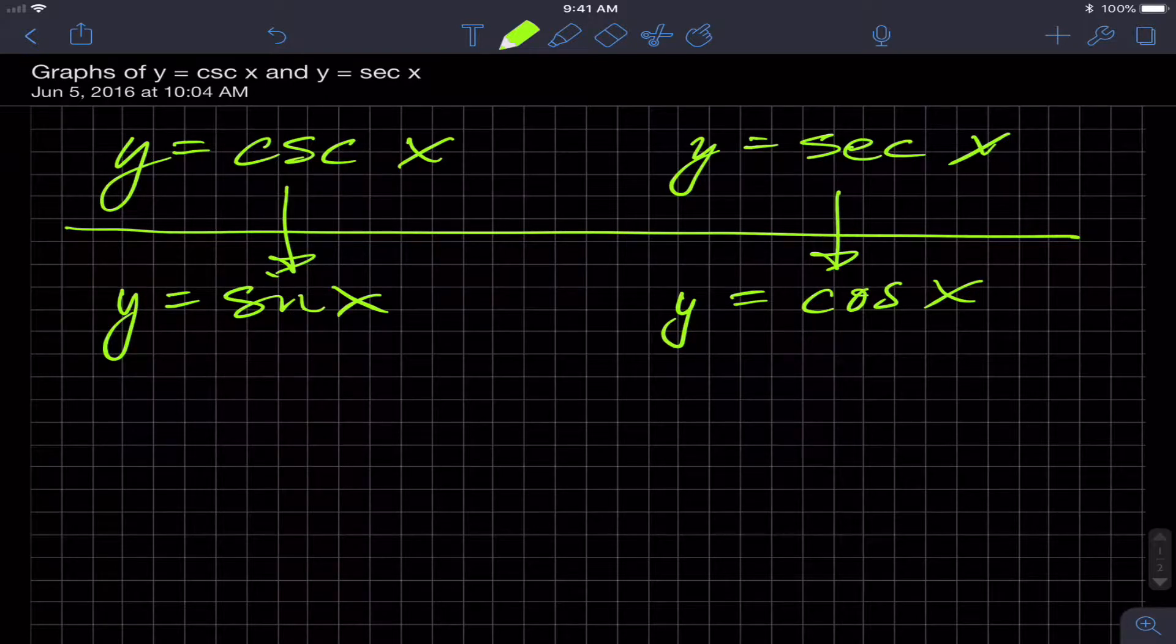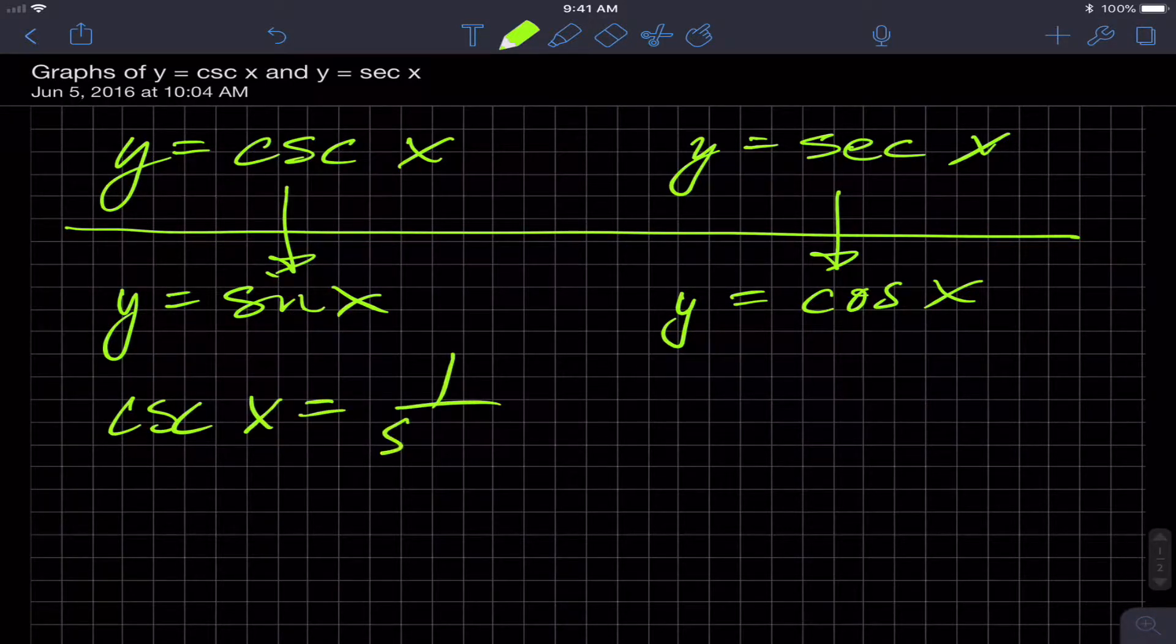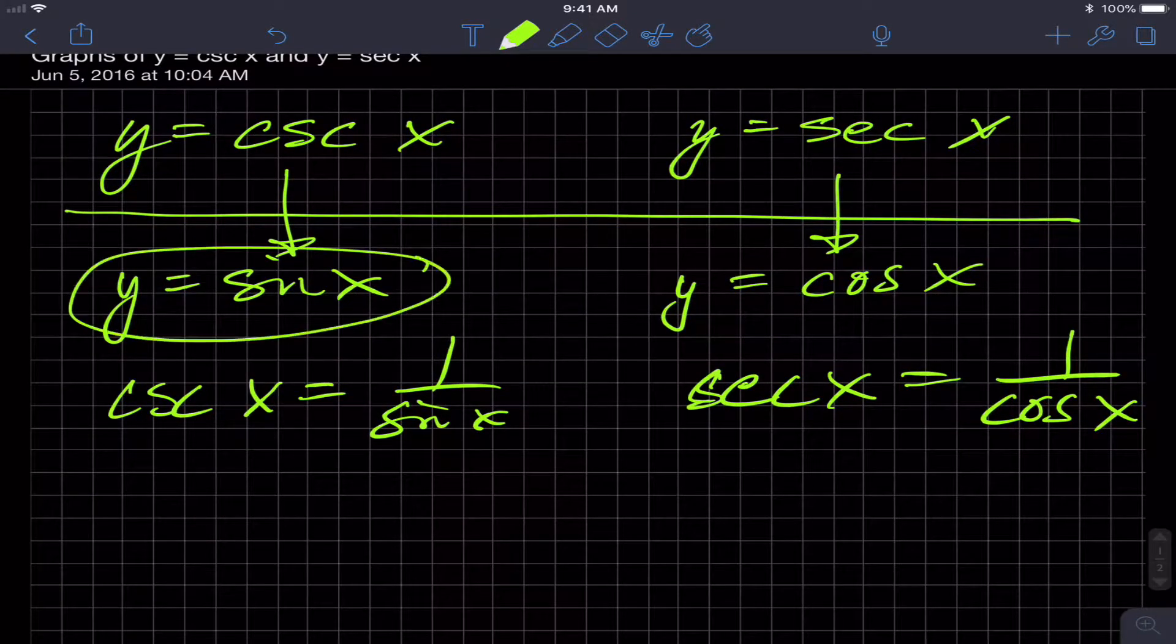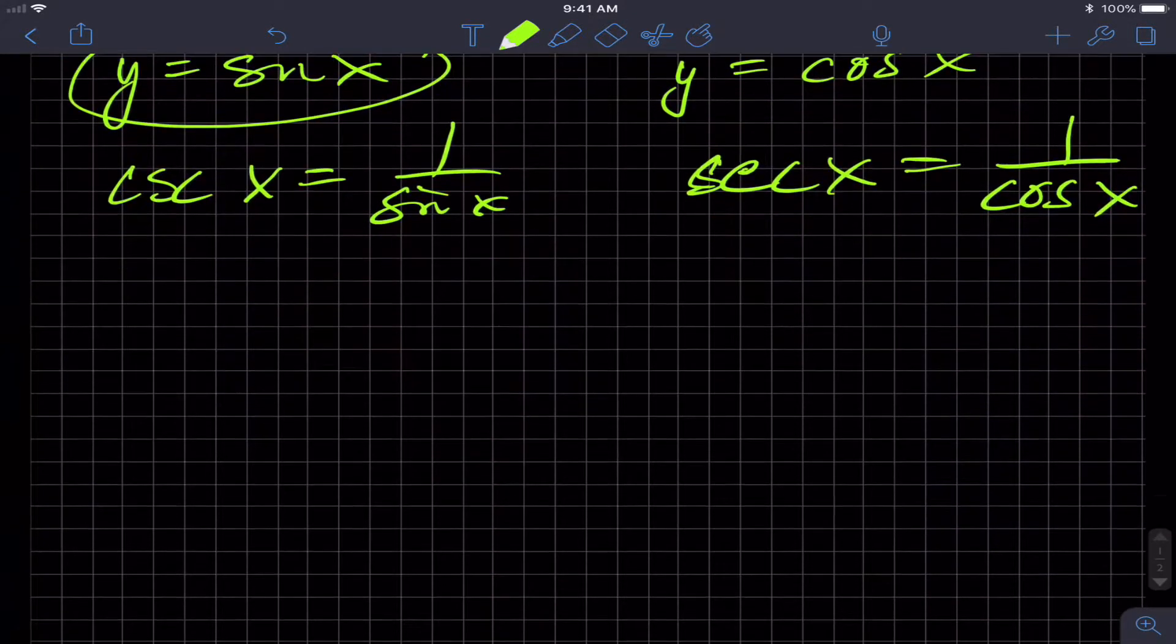In other words, cosecant of some angle is equal to one over sine of that same angle, and similarly, secant of x is equal to one over cosine of that same angle. So let's graph these. First, I'm going to quickly graph y equals sine x, and then we'll talk about how cosecant is related to that graph.